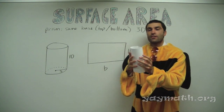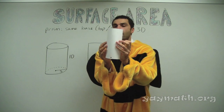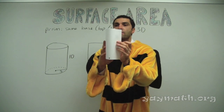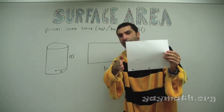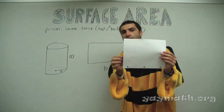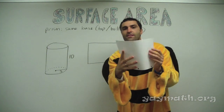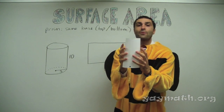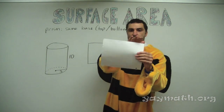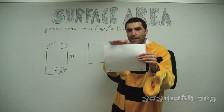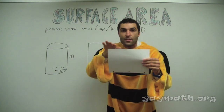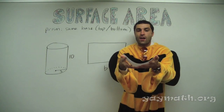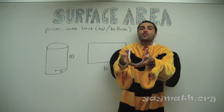Let's demonstrate it again. Here is our cylinder. Here is our rectangle. This is the height of the rectangle — thus it's the height of the cylinder. Six pi. Now we need this base.